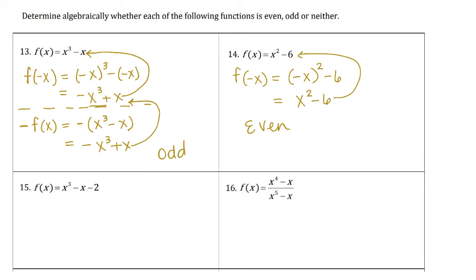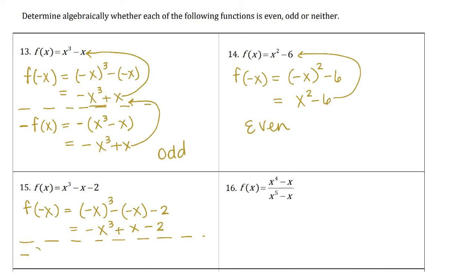Number 15 follows the same process. Starting with f(−x): we have (−x)³ − (−x) − 2, which simplifies to −x³ + x − 2. Comparing to the original, it is not the same, so not even. Looking at the opposite of f(x), we multiply every term by negative to get −x³ + x + 2. That is almost the same, but the sign of 2 is different, so this function is neither even nor odd.